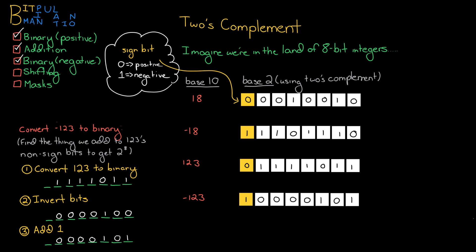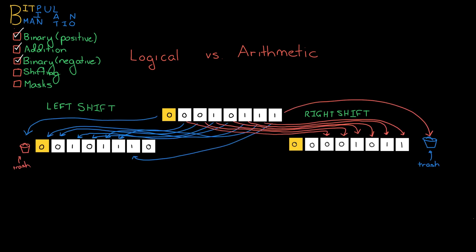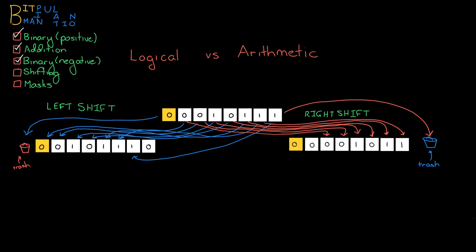The next topic I want to talk about is shifting — specifically two types: logical shifting and arithmetic shifting. So let's consider some number in binary. If we want to left shift, we just move everything over by 1 to the left, and if we want to right shift, we move everything over by 1 to the right. That top number is 23, the left shift number is 46, and the right shift number is 11. The left shift had the effect of multiplying that number by 2, and the right shift had the effect of dividing it by 2, with some truncation. That's not a coincidence — that's what a left shift and a right shift generally do.